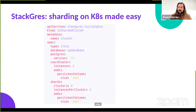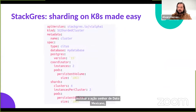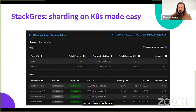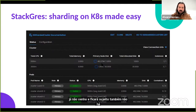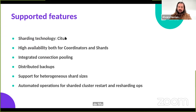What we've done at StackGres, thanks to Kubernetes and the power of CRDs, is create a custom CRD that makes deploying this whole architecture — with tuning, high availability, and almost everything I mentioned — as simple as typing a single manifest. You get the cluster started immediately. It's very high level: just the number of instances, the size, the version. In the web console you can see the status of your coordinators and shards. This is built on Citus, an extension for Postgres that does sharding, and we take all the power of Citus and make it extremely easy to orchestrate.